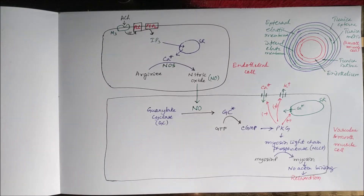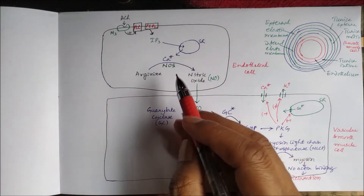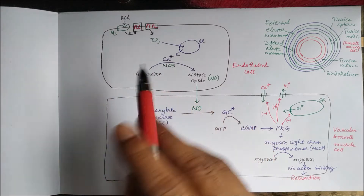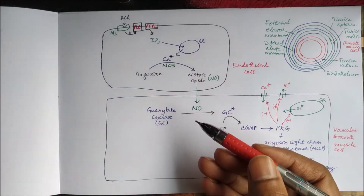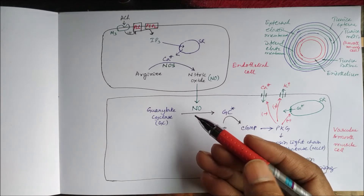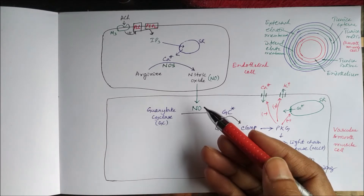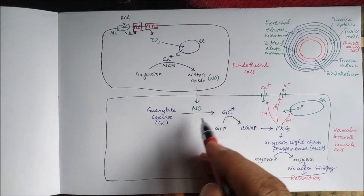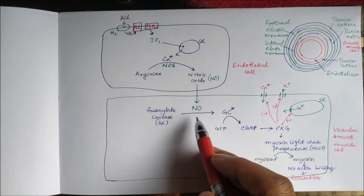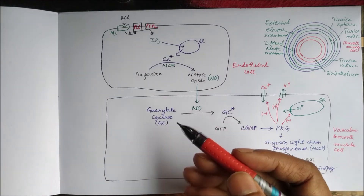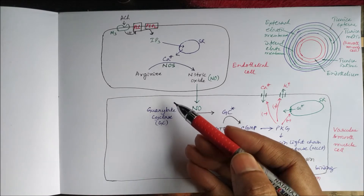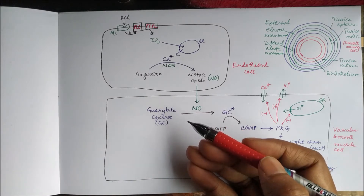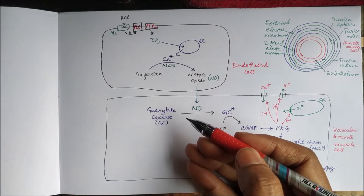Namaskar. Today we study the vasodilatory action of acetylcholine. Parasympathetic stimulation causes vasodilatation, but it is not direct — it is indirect through nitric oxide. We will discuss how that happens and how acetylcholine causes vasodilatation.